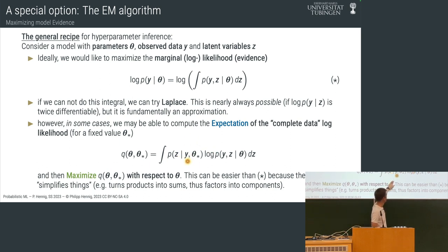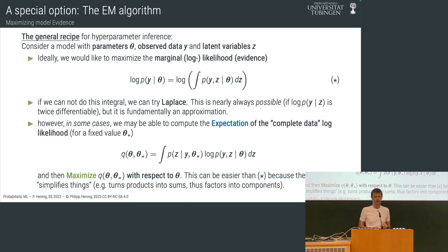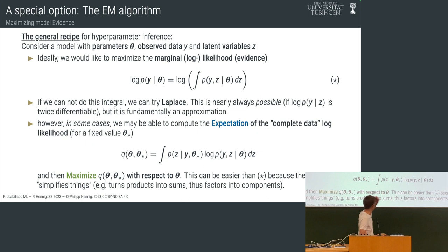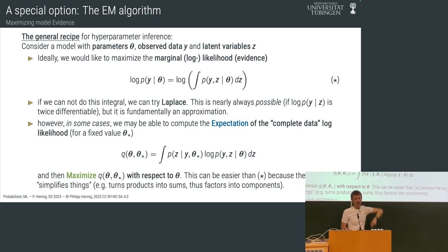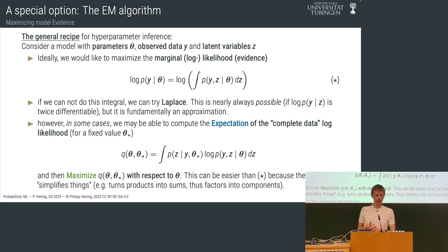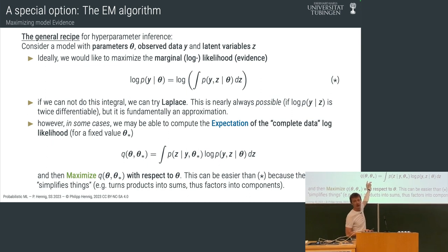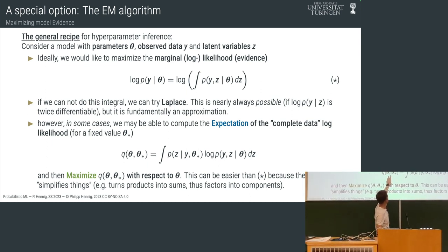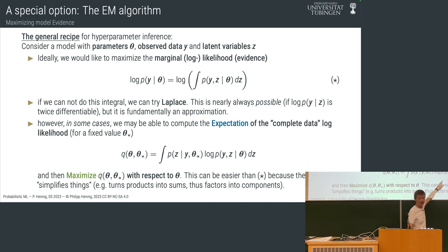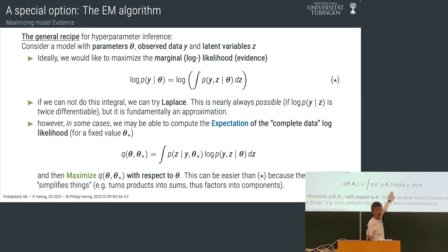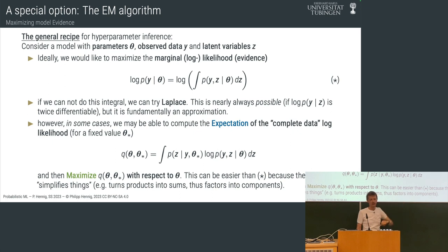This is an expectation we're computing — an expected value is an integral over a function against a probability distribution. Then we maximize this quantity with respect to theta. Note that the distribution controlling the integral gets a fixed theta star which we're not optimizing; we're only optimizing the theta in the back part of the expression.